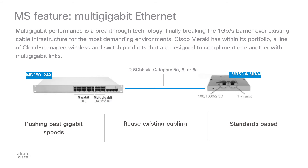The MS-350-24X is an addition to the Meraki MS-350 flagship Layer 3 stackable access switch family. It has 24 ports, 8 of which are multi-gig capable and can support speeds of 1, 2.5, 5, and 10 gigabits over supported cable types. This switch perfectly complements the MR-53 and MR-84 access points, which are also multi-gig capable.